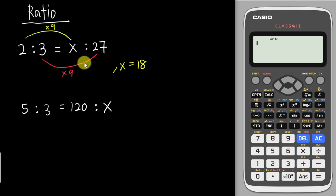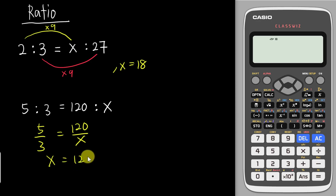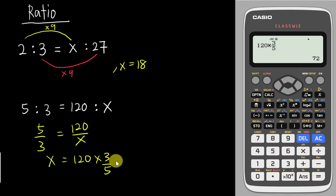The second method is to change the ratio into a fraction. For 5:3 = 120:X, write it as 5/3 = 120/X. Then solve for X: X equals 120 multiplied by 3 over 5, because when 5/3 moves to the other side you flip it. That gives X equals 72. However, not every student is strong in ratio, so the calculator function is quite useful.